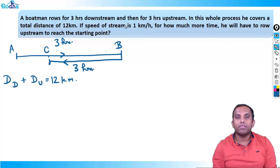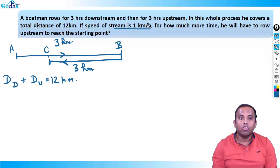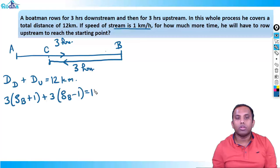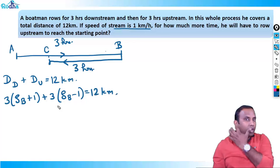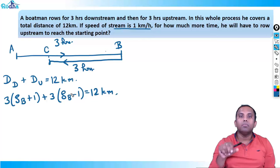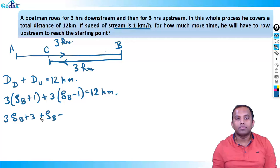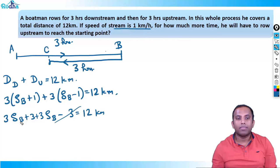What is downstream speed? Speed of stream is given as 1 km per hour. So distance is speed into time; time is 3 hours. For downstream: 3 into (SB + SR), and SR is given as 1, so 3 into (SB + 1). Plus upstream also for 3 hours: 3 into (SB − 1) equals 12 km. Expanding: 3SB + 3 + 3SB − 3 equals 12 km. The +3 and −3 cancel.